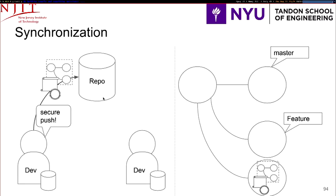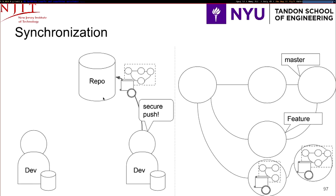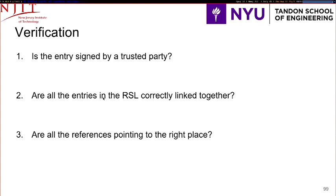When the other developer does a secure pull or fetch, he'll be able to verify and ensure that all the references are in the right place. Once the merge is done and the push is made back to master, a new RSL entry with the new state of the repository is pushed. When the other developer pulls, he or she will be sure that the state of the references is correct. Verification on the RSL is simple: we want to ensure all entries are signed by a trusted party, that RSL entries are linked together via hash chaining — the same way Git does it — and that the references are pointing in the right place.